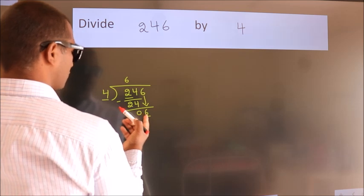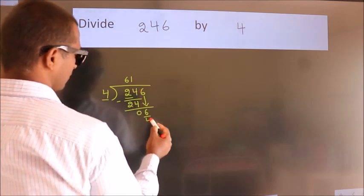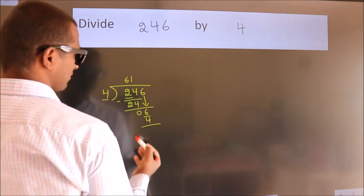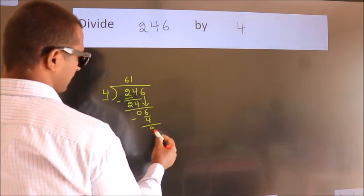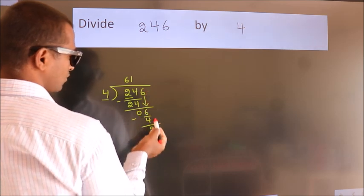A number close to 6 in 4 table is 4 once 4. Now we subtract, we get 2. After this, no more numbers to bring it down.